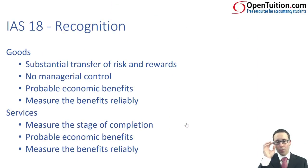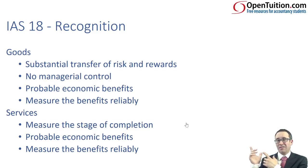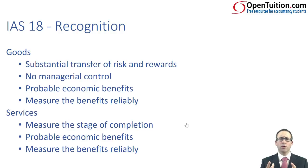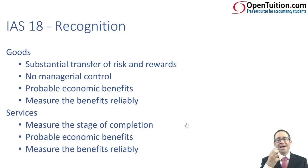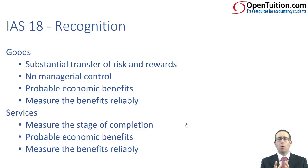If we look at the old IAS 18, it predominantly focused on the sale of goods and the provision of services. Looking at the recognition criteria, the two at the bottom — probable economic benefits and measure reliably — both for goods and services, come from the framework. So that was a good starting point, using the principles of the framework and adding more specific guidance. However, there was reference to a substantial transfer of risk and reward, and people were unsure what was meant by 'substantial' and by 'no managerial involvement' following a sale. That led to various issues.